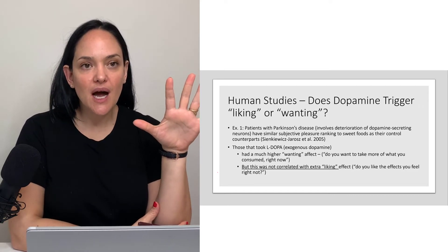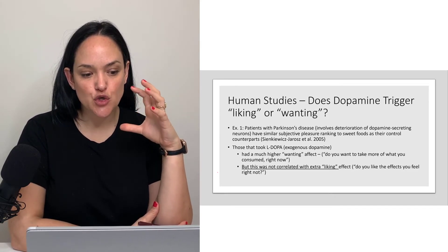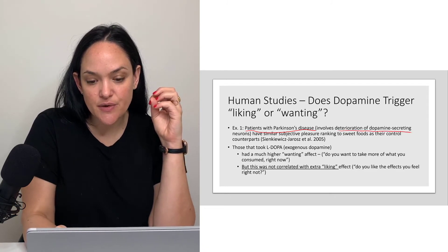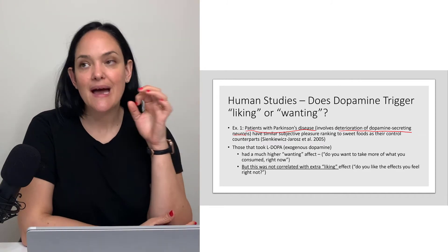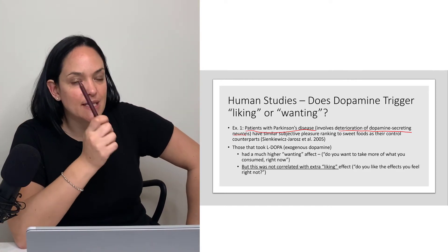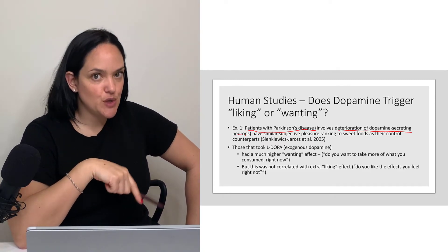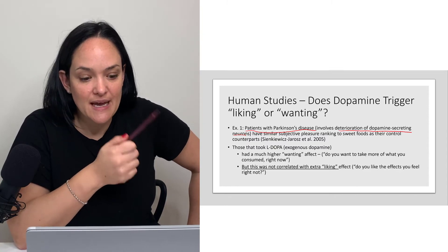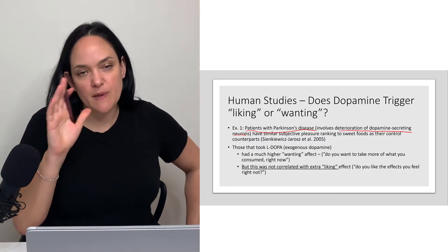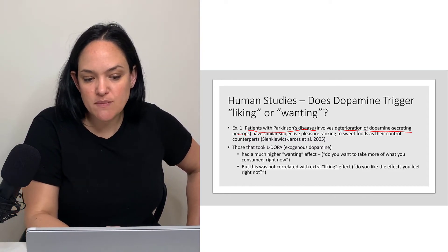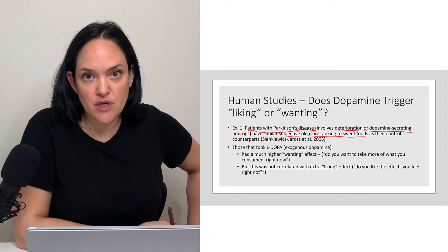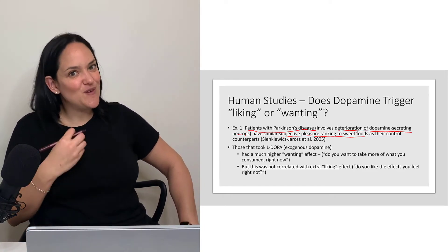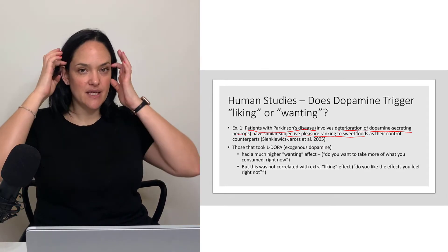A natural experiment we can examine involves patients with Parkinson's disease, where one of the main features is deterioration of dopamine-secreting neurons. If dopamine promoted liking, individuals with Parkinson's — who have less dopamine — would be expected to like certain things less. However, people with Parkinson's show similar subjective pleasure rankings to sweet foods as controls, so they don't seem to like pleasurable foods less.